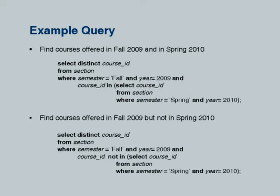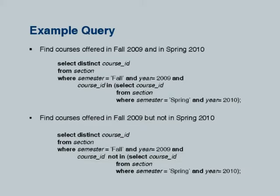That was a simple use of a subquery. Here is a more complex thing which is much harder to do if you do not have subqueries, which uses NOT IN. This is the same query except we want to find courses offered in fall 2009 but not in spring 2010. With a simple subquery, instead of IN we just flip it to NOT IN — the IN became NOT IN. So it is in fall 2009 but it is not in spring 2010. How would you write this query without a subquery? You can do set difference: find those which are offered in this minus those which are offered in that, but this is another natural way of writing it.